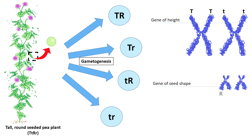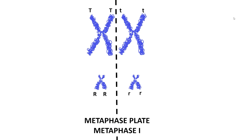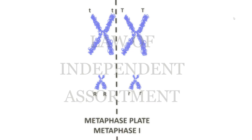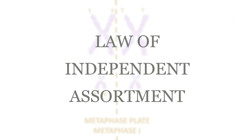For example, like this. When the two pairs of homologous chromosomes arrange or line up on the metaphase plate during metaphase 1, the arrangement is not always like this, but it can also be like this. Notice that how this pair of alleles arranges on the metaphase plate does not influence how the other pair of alleles arranges on the metaphase plate. This is what the law of independent assortment is all about.